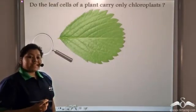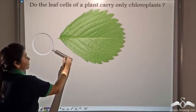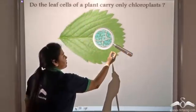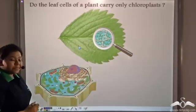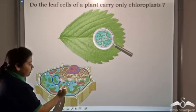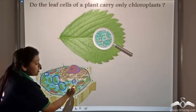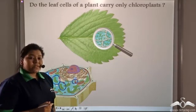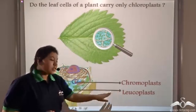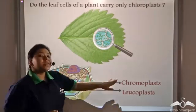So do the leaf cells carry only chloroplasts? There are a large number of cells in the leaf. Now let us focus on one cell. You see abundant chloroplasts present in the leaf cell. But what are these white structures and these colourful red structures present in the leaf cell? These are known as the chromoplasts and the leucoplasts. The white structures are known as leucoplasts, and the red colourful structures are known as chromoplasts.